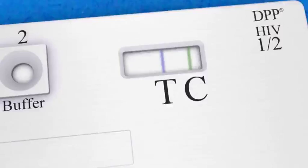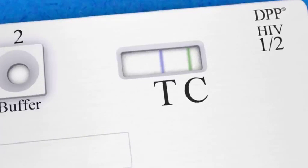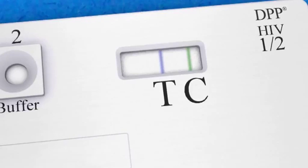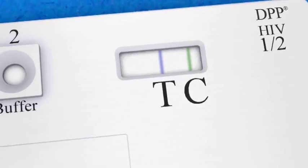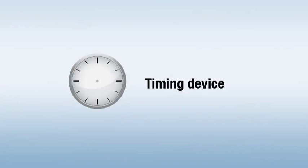Note that the DPP test device has two colored lines in the test window. One is blue and the other is green. Materials required but not provided include a clock, watch, or other timing device.